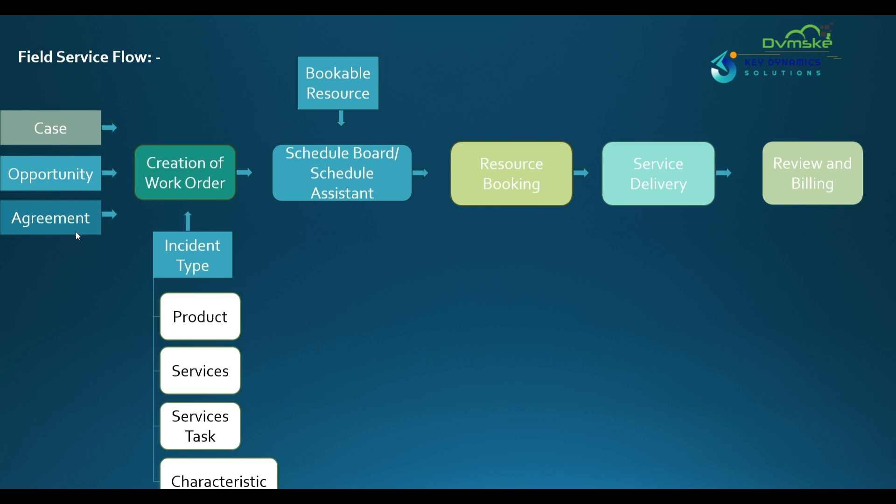Using agreements, you can automatically create a work order on a periodic basis. Once the work order is created, we need something called an incident type. The incident type works like a framework and contains the details of the products, services, service tasks, and characteristics that are required to complete the work order.